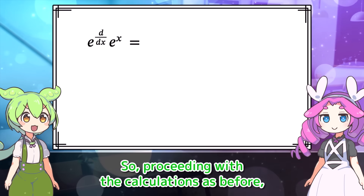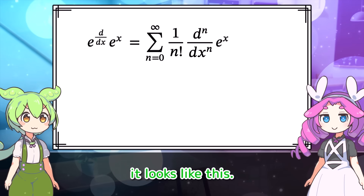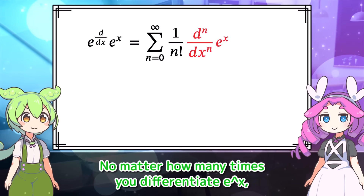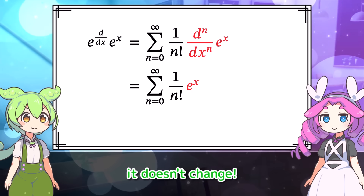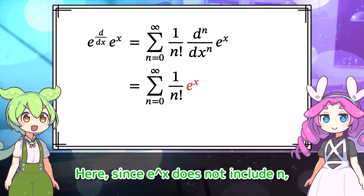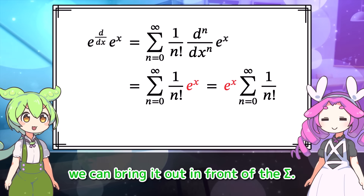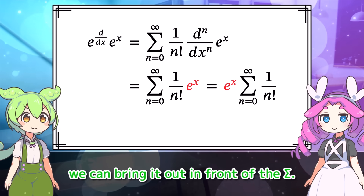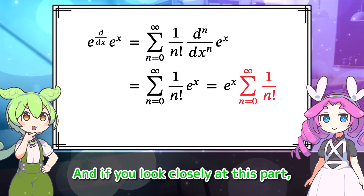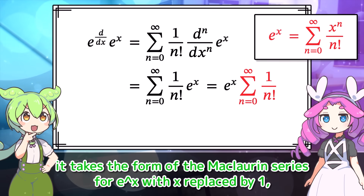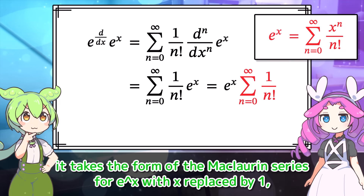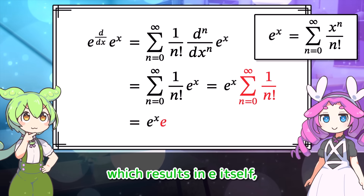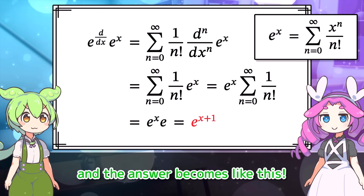Proceeding with the calculations as before, it looks like this. No matter how many times you differentiate E to the X, it doesn't change. Here, since E to the X does not include N, we can bring it out in front of the sigma. And if you look closely at this part, it takes the form of the Maclaurin series for E to the X with X replaced by 1, which results in E itself, and the answer becomes like this.